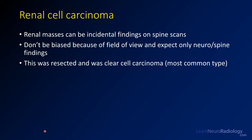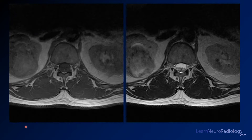This is a case of renal cell carcinoma. You might say this is neuroradiology — however, you have to be alert to incidental findings. You can't be biased just because of the field of view and expect only neuroradiology cases. In this case, the patient had a mass in the right kidney that was resected. On the axial images through the lumbar spine, you can see this mass in the right kidney. It's T1 hypointense and heterogeneous on T2 — it definitely does not look like a simple cyst, so you don't want to just blow that off.